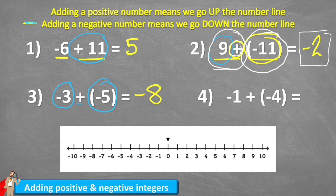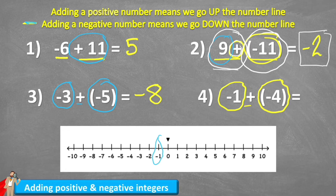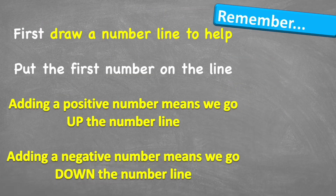Let's do one more. This one I'm starting with negative one and I'm adding a negative four. So negative one — circle it on my number line — and then I add another debt. So I'm going one, two, three, four, and I land on negative five. And there we go — that is adding positive and negative numbers.